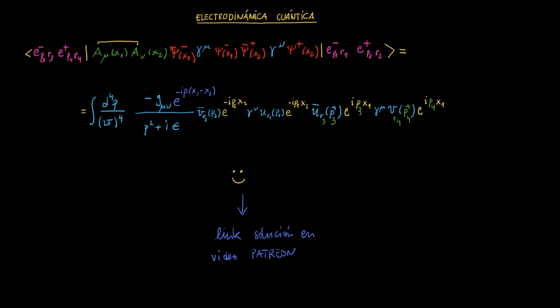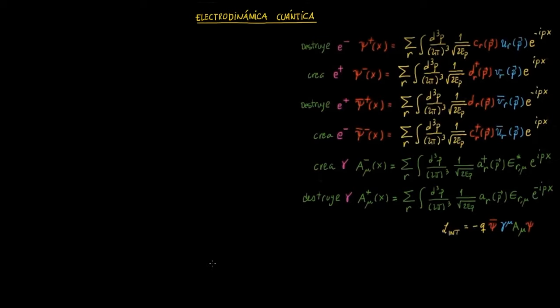Si os acordáis, os puse en el capítulo anterior todo esto. Que por ejemplo, el campo psi más lo que hacía era destruir electrones, el psi menos crear positrones, etc. Tenéis aquí todo esto. Y luego, por otro lado, recordad que el término de interacción de Lagrangiano era menos q por no sé qué, por este asunto de aquí.